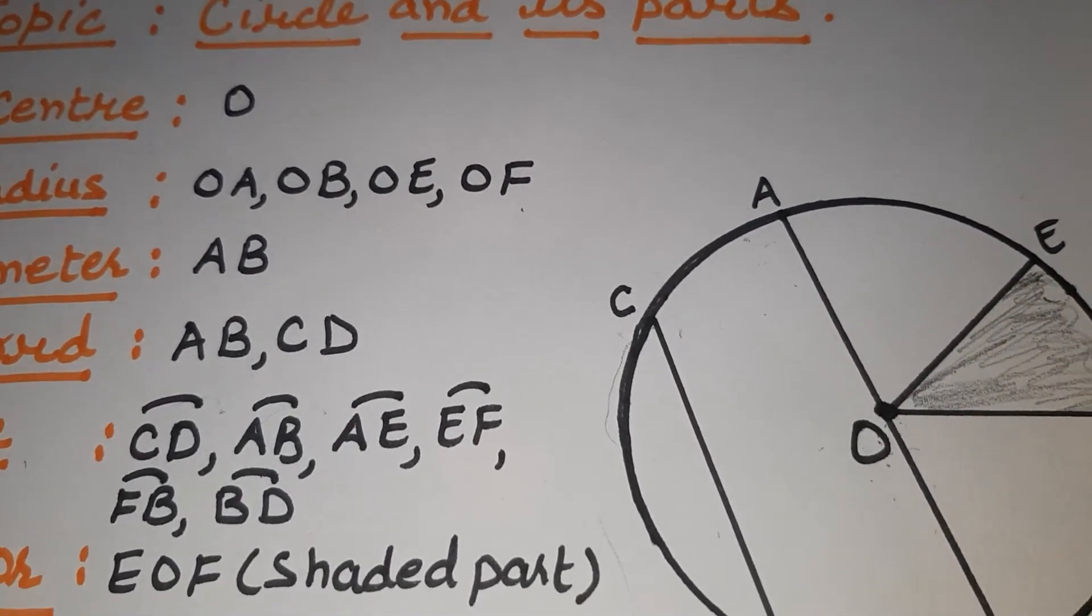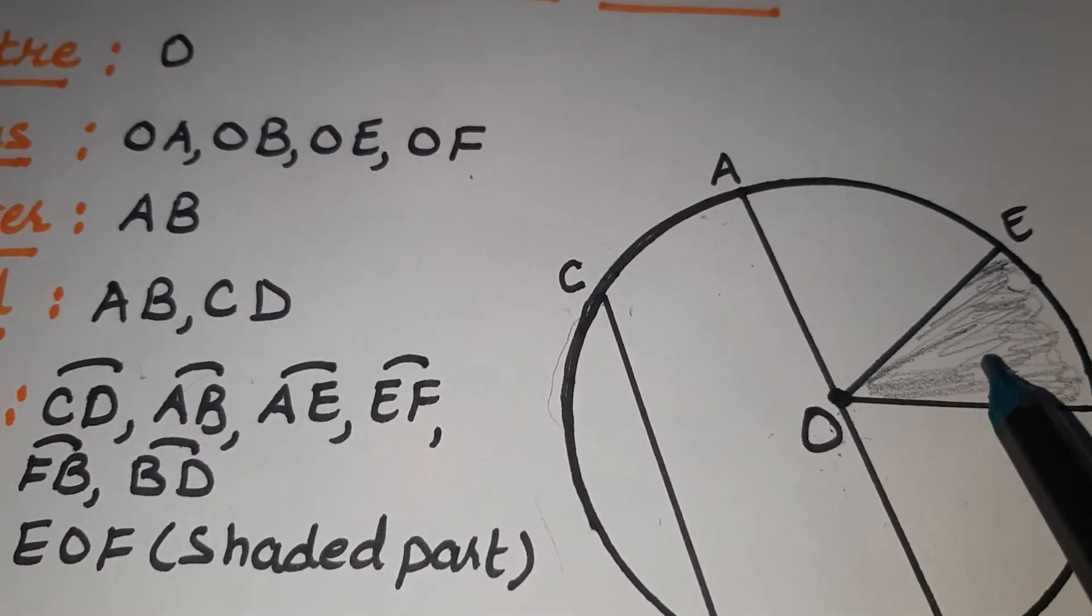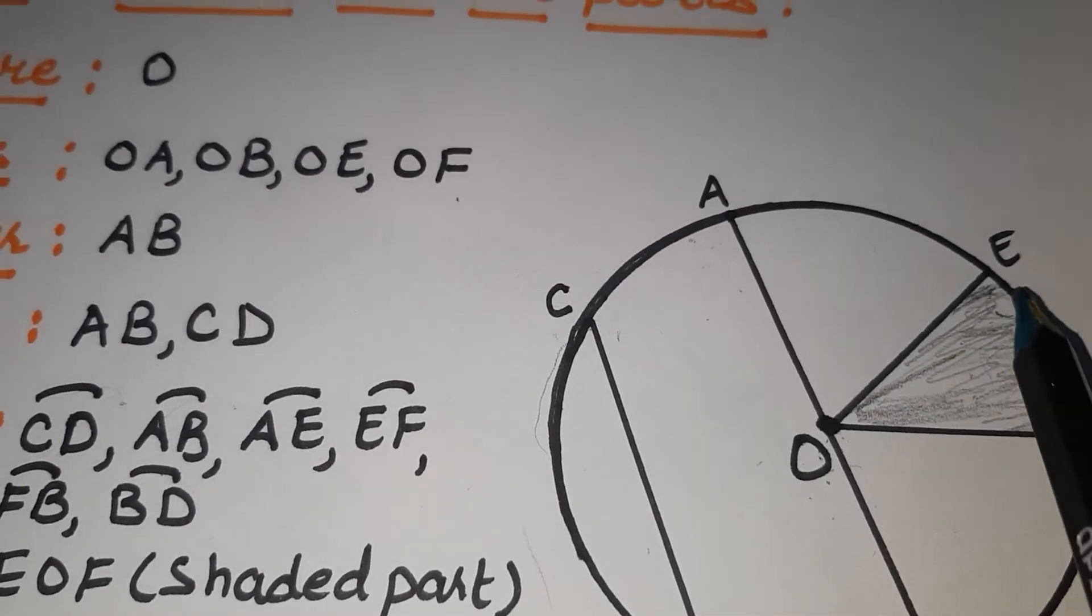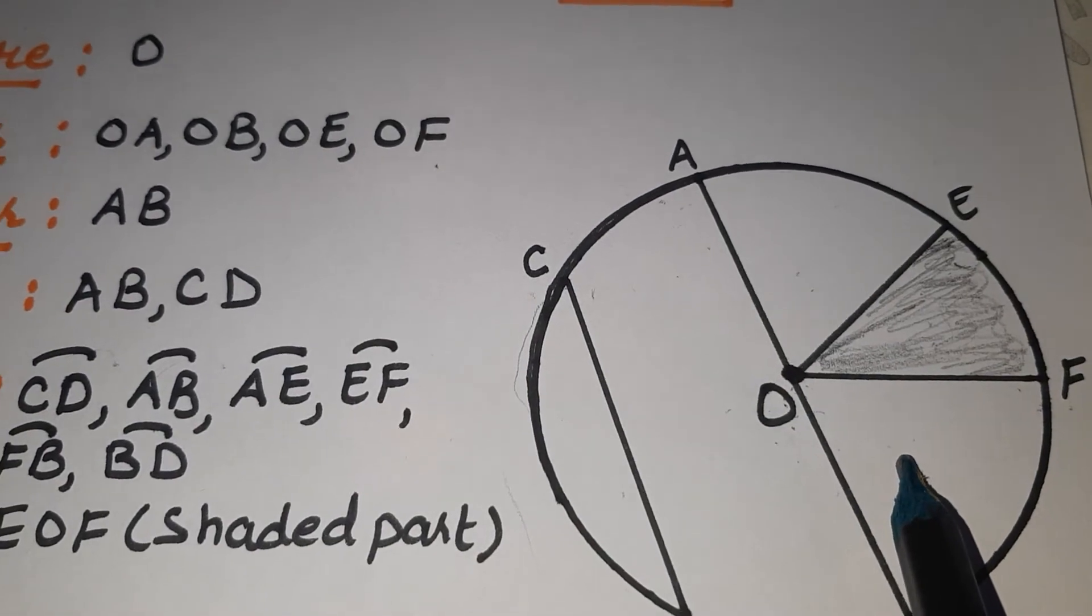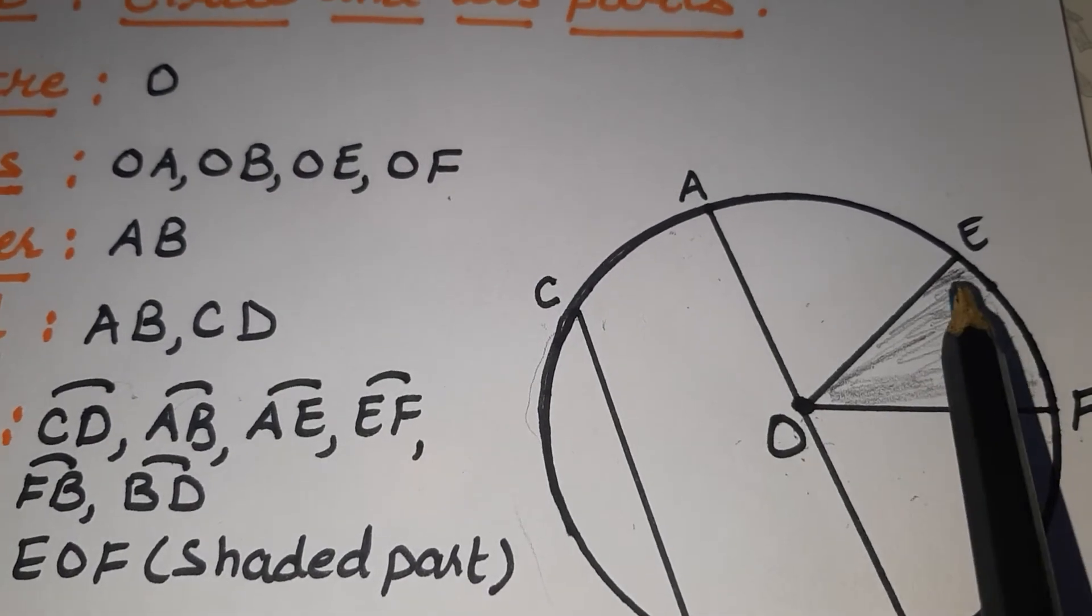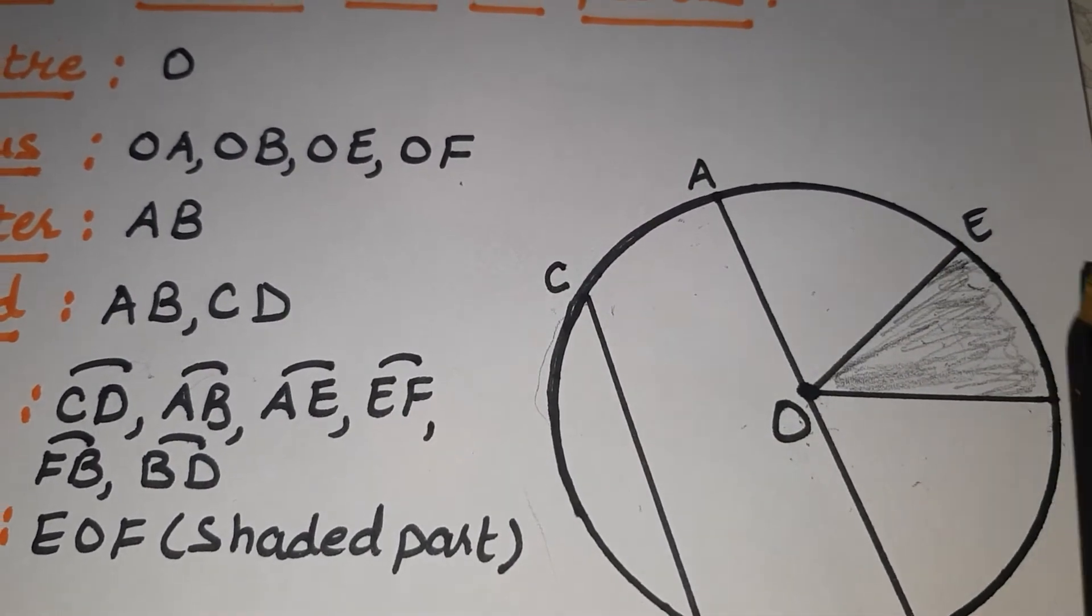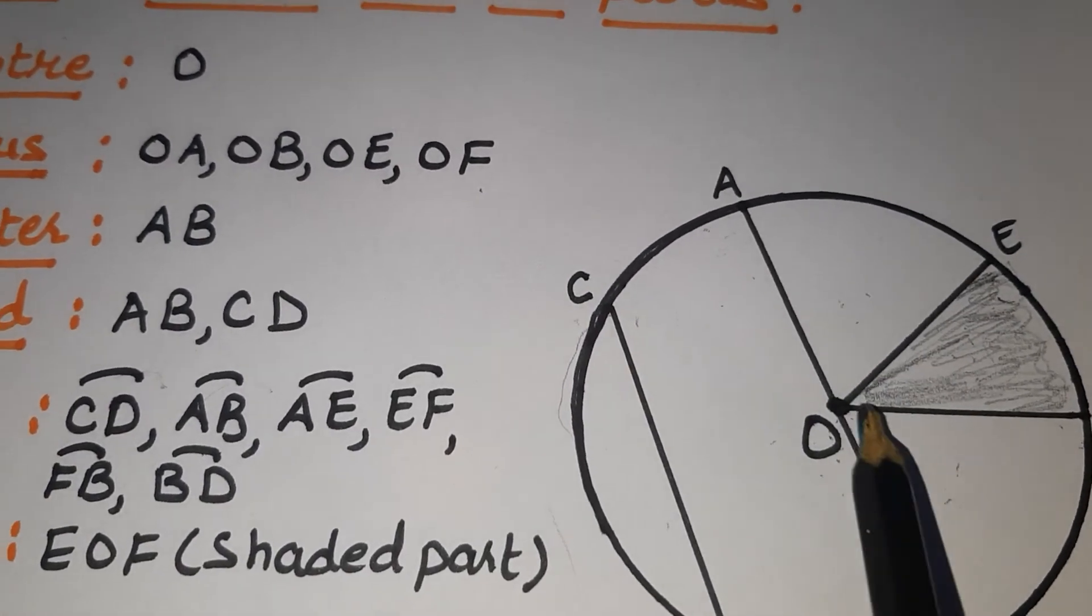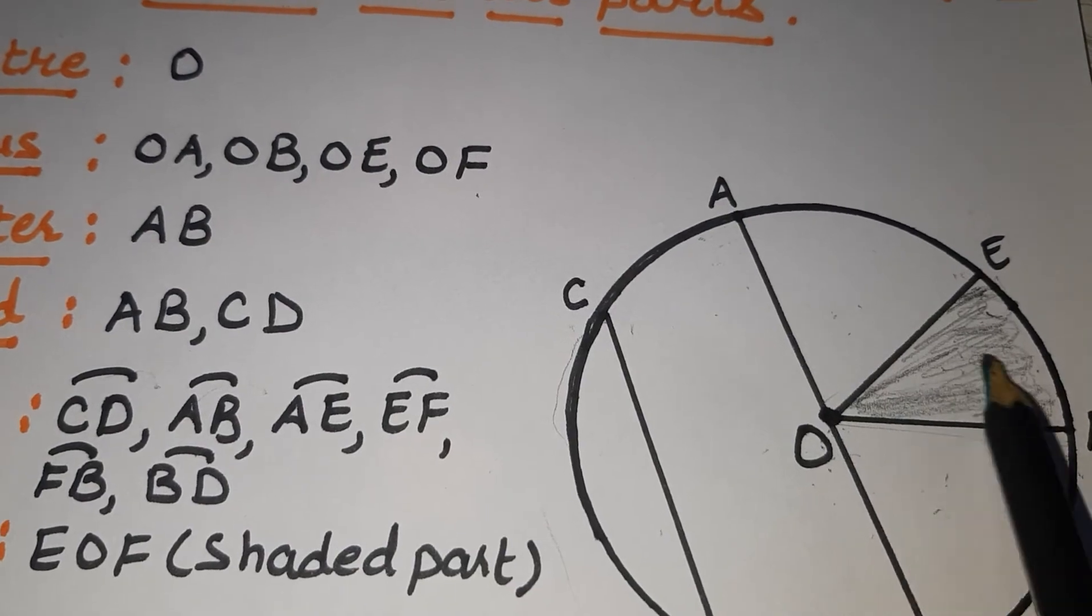So actually it is not any point, it is not any line segment, it is region. Region means space, area. So this region is enclosed from one side by the arc and from other sides by two radii of the circle. So this shaded part is called sector.